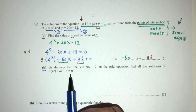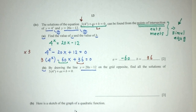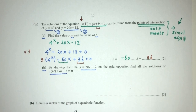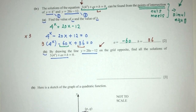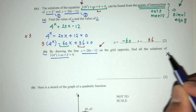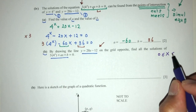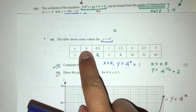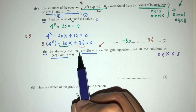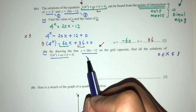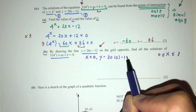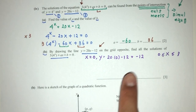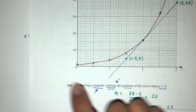For part b, by drawing the line y = 20x - 12, we have to find the solution. To draw a straight line, we just need two points to join them. The graph is defined for x between 0 and 3 according to our table. Choosing x = 0: y = 20(0) - 12 = -12. However, this point is not very useful because we don't have -12 on the graph. Let's choose x = 1: y = 20 - 12 = 8, giving point (1, 8).